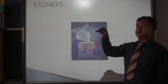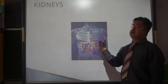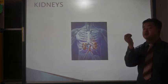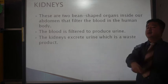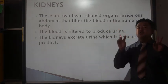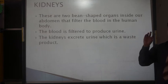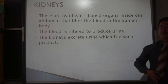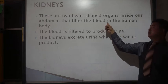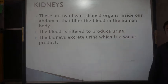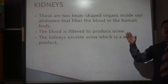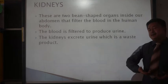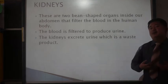The last internal organ we discuss is the kidney. You can see the image of the kidney here — it is the same shape as a bean. There are two bean-shaped organs inside the abdomen that filter the blood in the human body. The blood is filtered to produce urine through the kidneys.